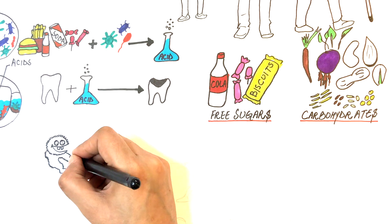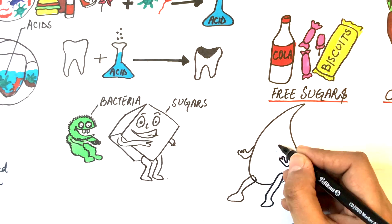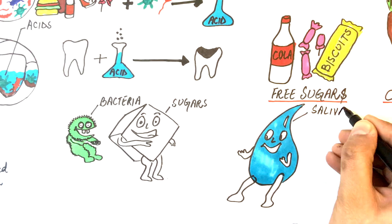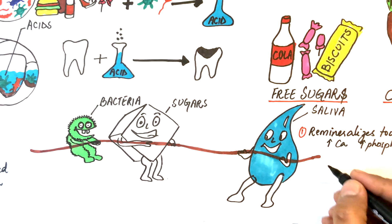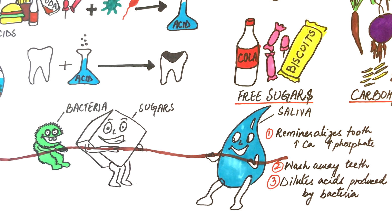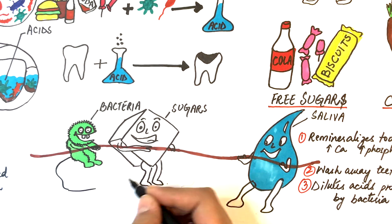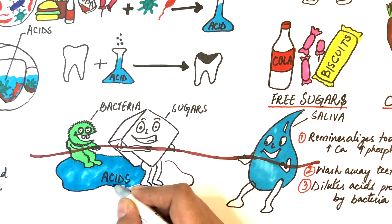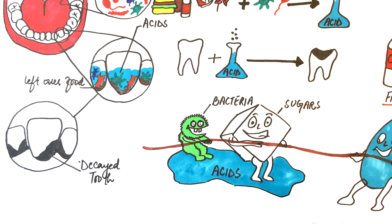Besides the destructive processes produced by the acid-forming bacteria which use sugar as a substrate on our teeth, nature has also given us some protective factors in our oral cavity in the form of saliva. Saliva, as it has a high amount of calcium and phosphate, remineralizes the demineralized tooth and can reverse caries in its initial stages. It also helps prevent tooth decay by washing away sticky and sugary foods from the tooth surface and it dilutes the acids produced by the bacteria. However, the exact problem starts from the constant burden of acids produced by frequent consumption of sugary foods, which overburdens the saliva to heal the tooth and results in more mineral loss from the tooth surface, causing the demineralization process beyond repair.